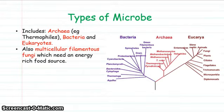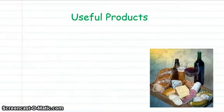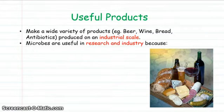There are multicellular filamentous fungi, which need an energy-rich food source. Microbes are generally highly adaptable, living in all sorts of different environments on the planet using a variety of substances for growth. We use microbes to create useful products — a wide variety of different things: beer, wine, bread, and antibiotics — and they are produced on an industrial scale. We also use them for research and industry.